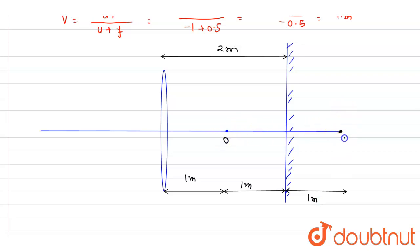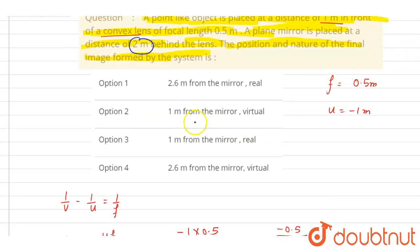This is the object and this is the final image. This is the image by the lens. If you see here, the object was kept at a distance of one meter, the first image formed here, and then this image was acting as the object for the plane mirror, and the final image is one meter behind the plane mirror and it is virtual. So B is the correct answer. Thank you.